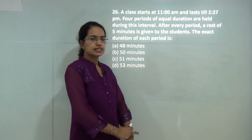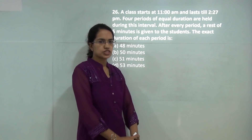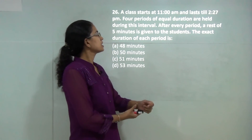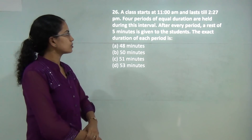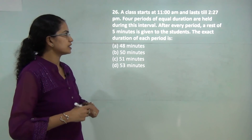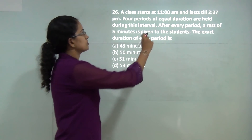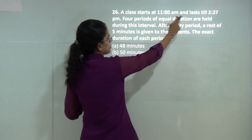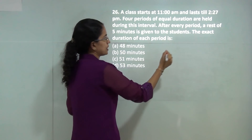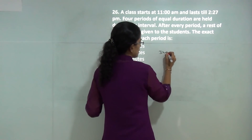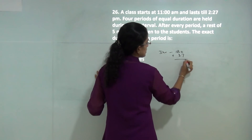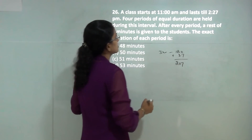In this class we will be solving the next 25 questions for the CSET paper 2, 2016. The first question talks about calculating the exact duration for each period. From 11 am to 12 pm it would be 3 hours, which is 180 minutes, plus another 27 minutes, so it would be 207 minutes.